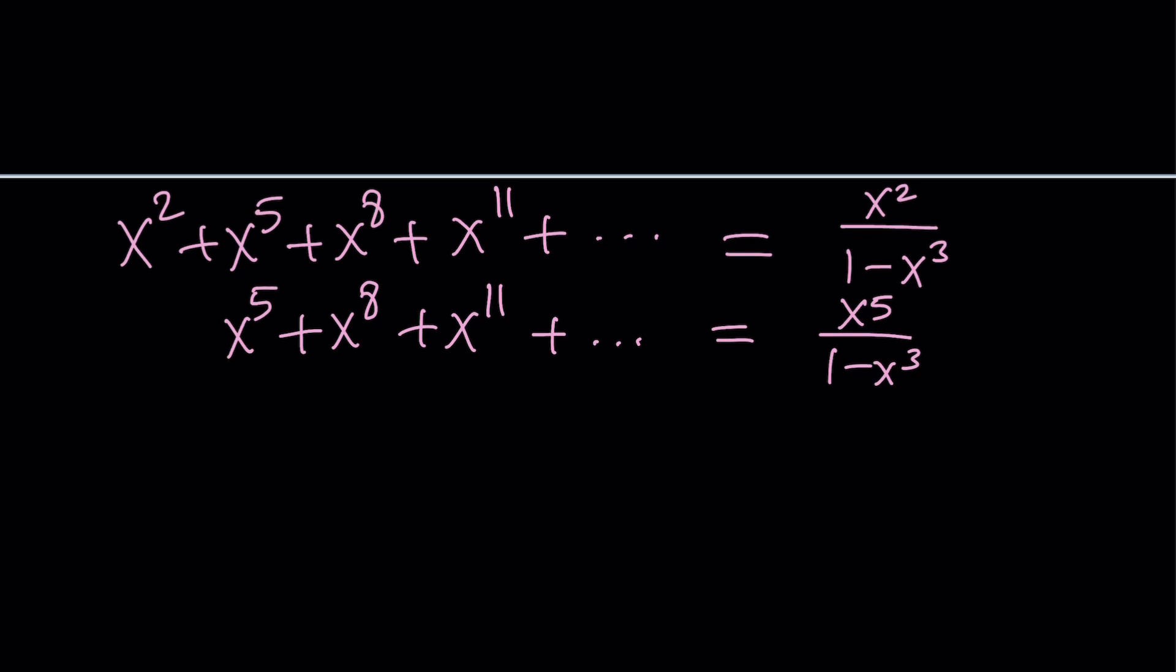So our first term is going to change, but the common ratio is not going to change because we're using the same series. We could also express it as follows. Take the first series, the sum, and subtract x squared from it. But this is a little easier because we're using the formula over and over. Make sense?